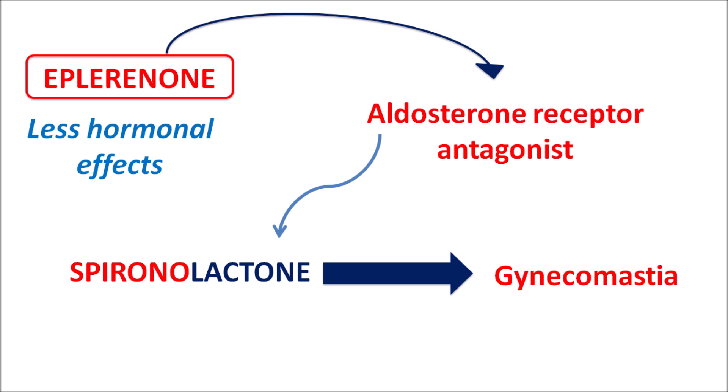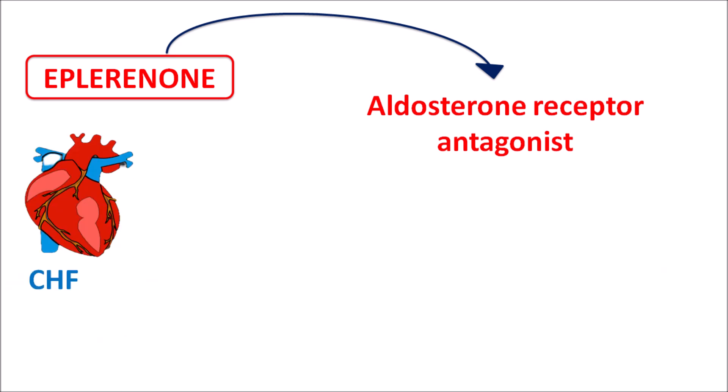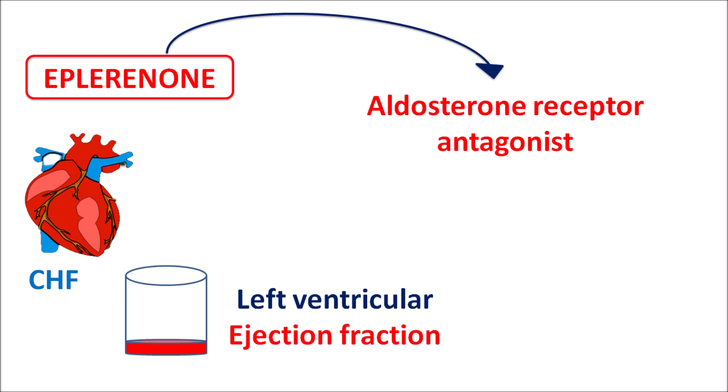In this video we will discuss how eplerinone acts, its important precautions, drug interactions, contraindications, side effects, and doses. One of the clinical uses of eplerinone is in the treatment of congestive heart failure, particularly after myocardial infarction, where there is decreased cardiac output resulting in a left ventricular ejection fraction less than or equal to 40%. In such patients, eplerinone can be used to reduce cardiac work, as this drug increases sodium excretion, thereby reducing cardiac work and improving cardiac efficiency.